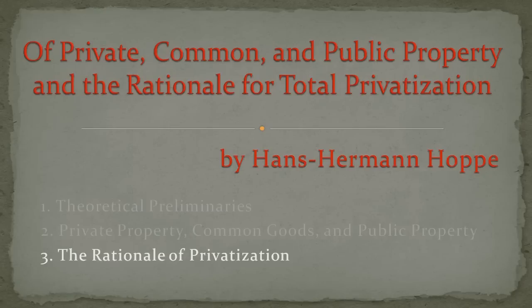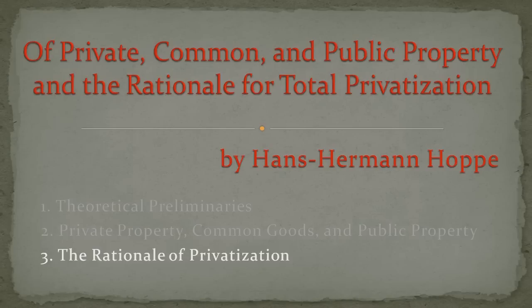The rationale of privatization. It should be clear now why the institution of public property is dysfunctional. Institutions and the norms underlying them are supposed to help avoid conflict. But the institution of public property — of public streets — creates and increases conflict. For the purpose of conflict avoidance and peaceful human co-operation, public property must go. All public property must become private property. But how to privatize in the real world, which has developed far beyond the simple village model I have so far considered?